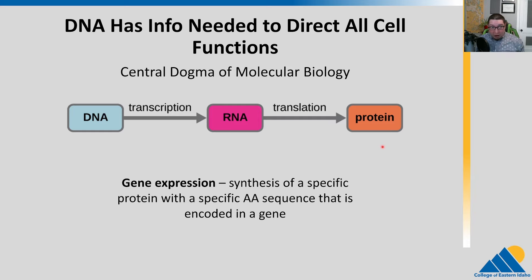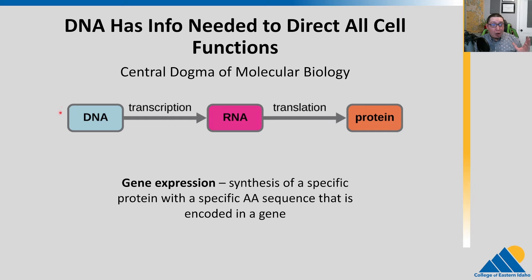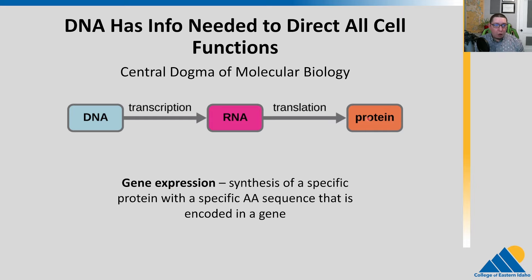DNA has the information needed to direct all cell functions, to some extent — there are caveats we're learning more about. But encoded in the DNA are all of the genes. That is the central dogma of molecular biology: the DNA encodes information in the form of genes. A gene is any region of DNA that codes for a transcript in RNA. The first part of the central dogma is that DNA gets transcribed into RNA. That RNA — focusing on protein coding genes — will be mRNA and will be translated into a protein sequence. There are non-coding genes that don't code for proteins, but we're going to focus on protein coding genes for now.